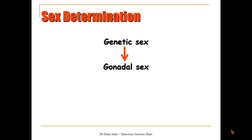Then, according to the absence or presence of the Y chromosome, the gonadal sex is determined. If the embryo carries the Y chromosome, the gonad will develop into testicles. If there is no Y chromosome, then the default development of the gonad will be ovaries. After the gonadal sex, later on, the phenotypic sex — the outer appearance in either the external or internal genitalia — is determined.